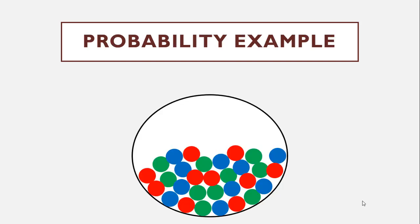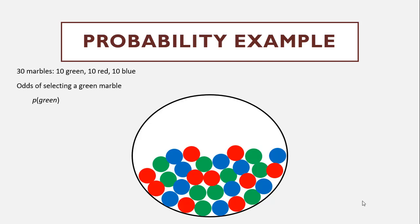So let's make this concrete. If we're talking about the probability of an event, suppose we had a container with a bunch of marbles in it — 10 red, 10 blue, 10 green — we could pull a marble out of that. So we have 30 total marbles, 10 of each of these three colors. We could ask: when we pull a marble out, what are the odds of selecting a green marble? What is the probability of green?